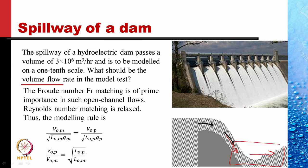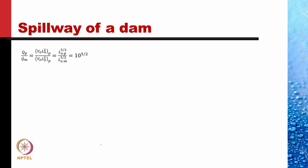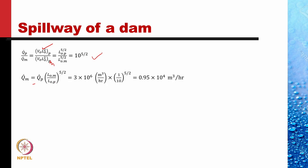The Froude number for the model should equal that for the prototype. From this, we get the velocity ratio V_0p / V_0m = sqrt(L_0p / L_0m). The volume flow rate varies like velocity times area, and since the geometry is similar, the area scales like the characteristic length squared. So the volume flow rate in the prototype is V_0 × L_0² for the prototype and for the model respectively, giving a ratio of 10^(5/2). Given that the prototype volume flow rate is 3 million m³/hour, the model flow rate should be about 1/100th of that.